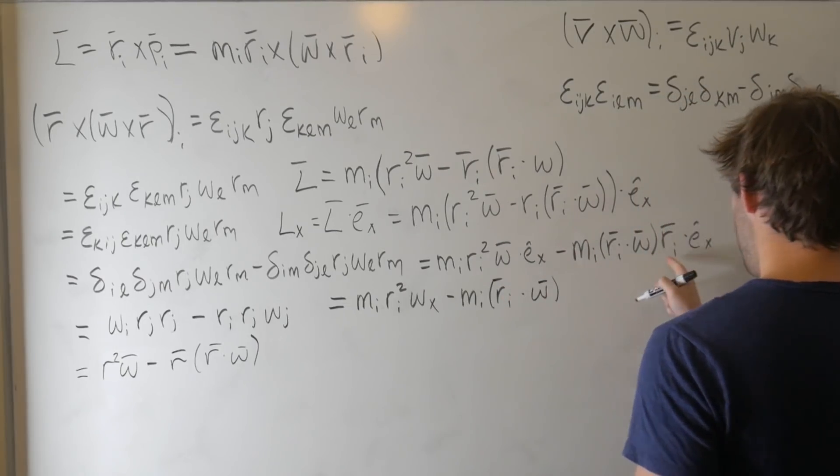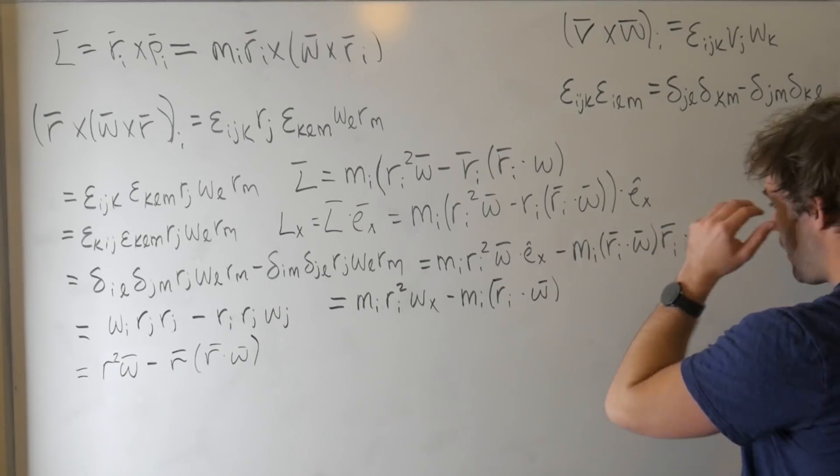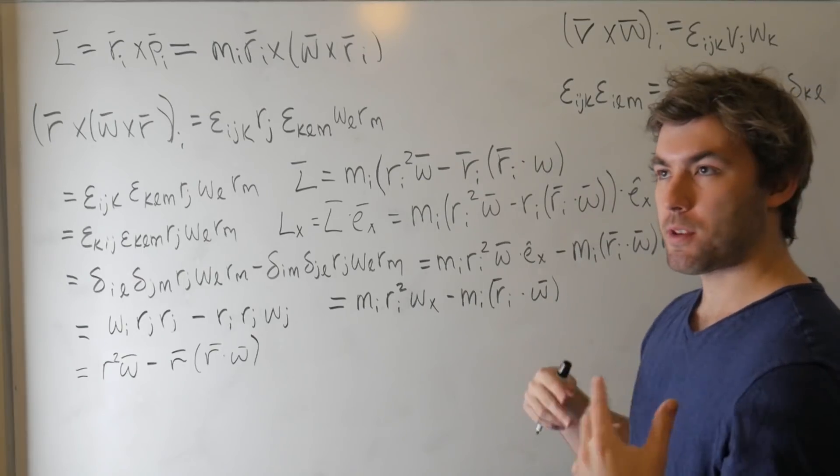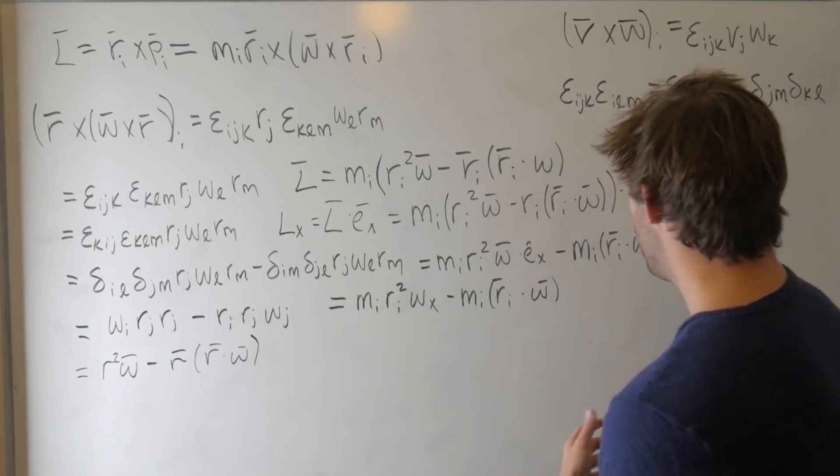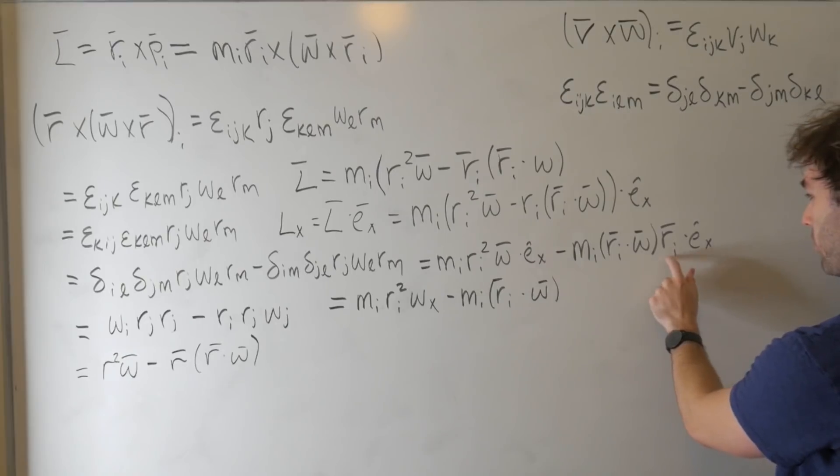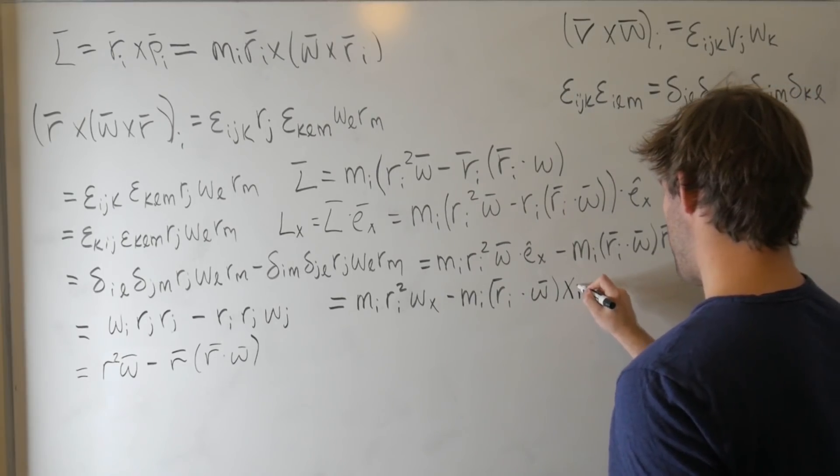And then let's just distribute this out. So this is just equal to m_i r_i squared omega dot e_x minus, I'm going to pull this forward because this is just a number, but there's also an m that distributes, minus m_i r_i dot omega times r_i dot e_x. So all I did here was I distributed the m_i and take the dot product between each part here. The dot product between e_x and omega is just going to give us the x component of the angular velocity. So this is just equal to m_i r_i squared omega_x minus m_i r_i dot omega. This is just a scalar. And then this is going to give us x_i. So r_i dot e_x, we'll call that x_i.